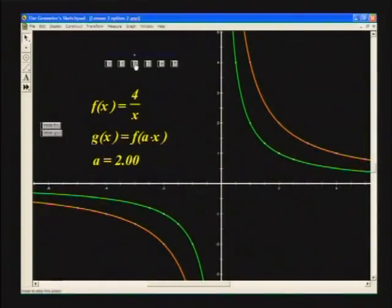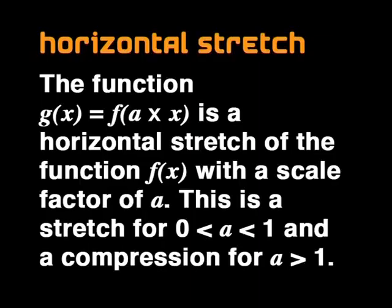Amazing, isn't it? I'm losing track. Won't you give us a quick summary again? In this demonstration, we've seen that the function g of x equals f of a times x is a horizontal stretch of the function f of x with a scale factor of a. This is a stretch for 0 smaller than a smaller than 1 and a horizontal compression or reduction for a greater than 1.